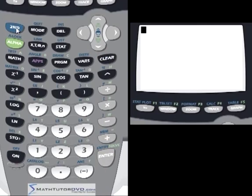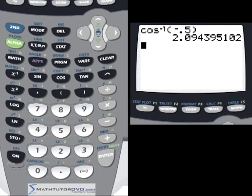But in any case, you can see that you can take negative 0.5 and maybe take the inverse cosine of that negative 0.5, and it'll spit out a number in radians, 2.09 radians.